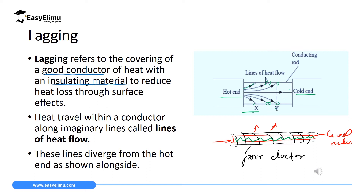So for us to ensure that all the lines of heat flow lie within the conductor, we will bring an insulator such that when heat wants to escape to the surface of the conductor, it will be reflected back and maintained within the conductor. In the next part, we are going to see how lagging helps to reduce this heat loss.